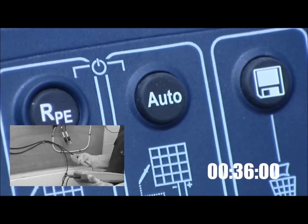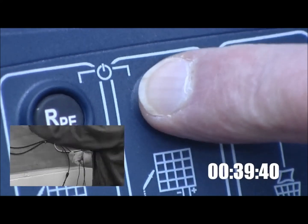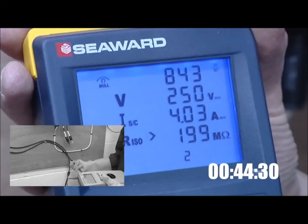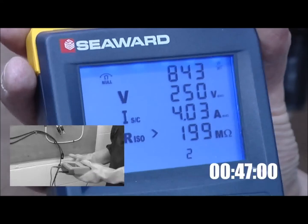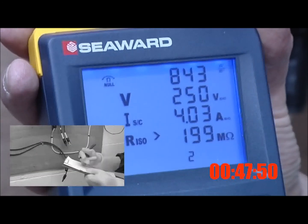Once the PV150 is set up, simply pressing the auto key will carry out all three tests automatically. The PV150 eliminates the need to short the circuit manually for the short circuit current test, making testing much quicker and safer.